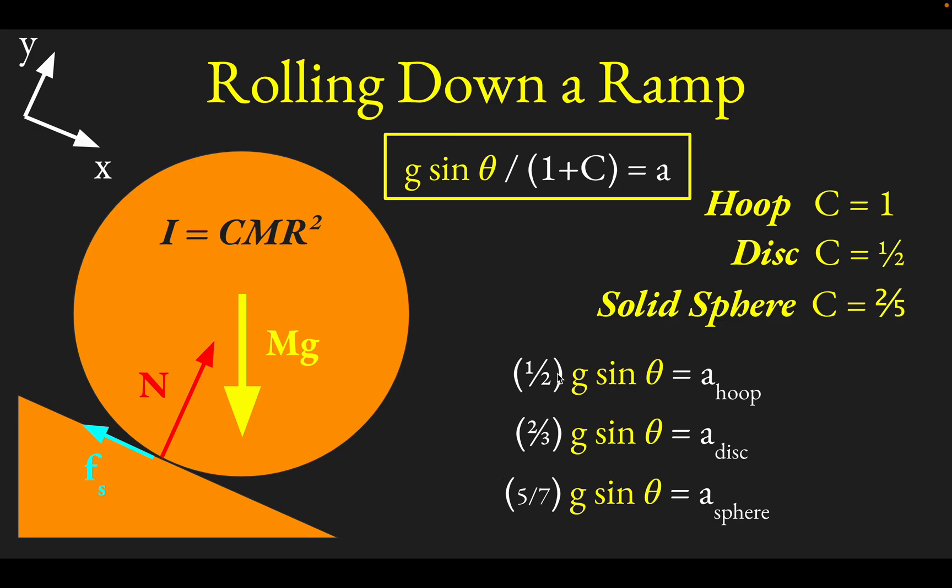Coming in last place would be the hoop with an acceleration of only 1 half g sine theta. Second place would be the disk. And winning the race will actually be the sphere with an acceleration of 5 sevenths g sine theta.